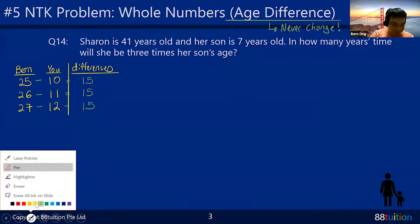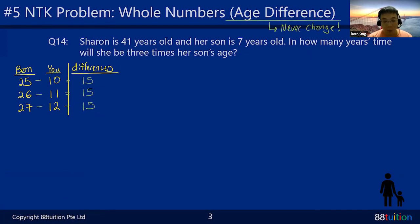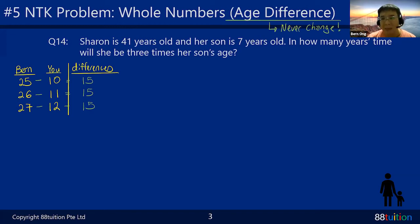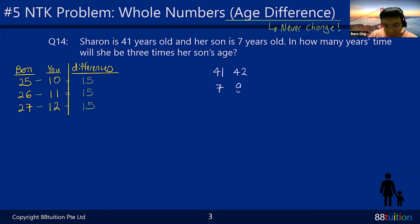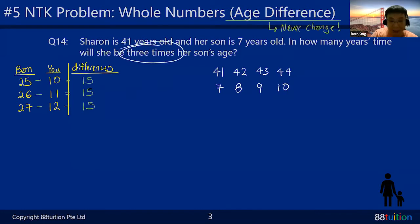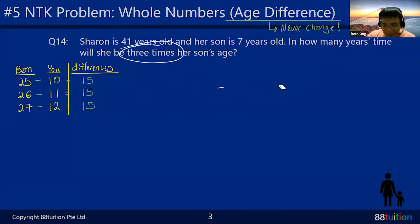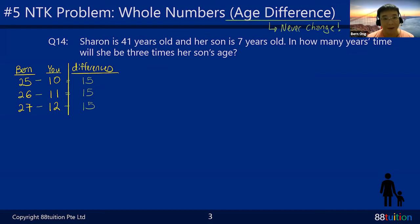We are going to use this concept for the next few questions. Let's look at question 14. Sharon is 41 years old now and her son is 7 years old now. In how many years' time will she be three times her son's age? Some of you want to do the listing method — you'd list Sharon at 41, son at 7; next year 42 and 8; then 43 and 9, and so on until you find a three-times relationship. But listing method is very time-consuming.